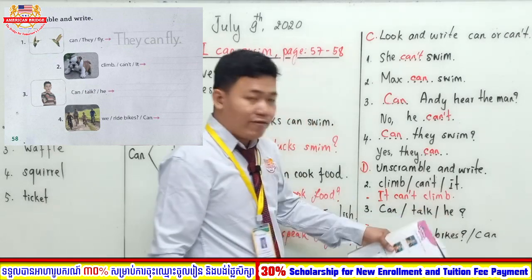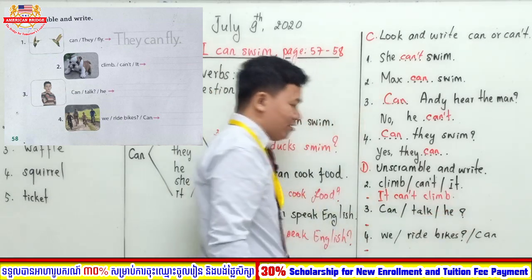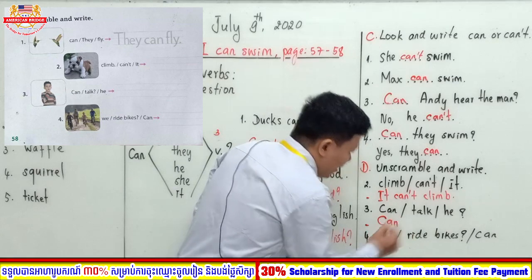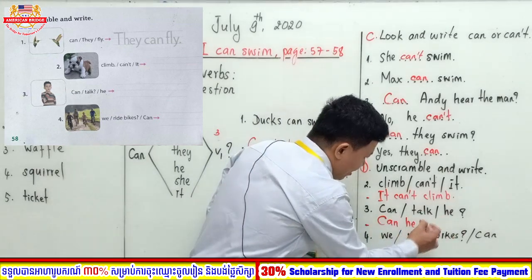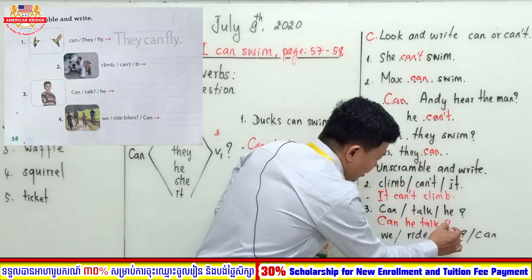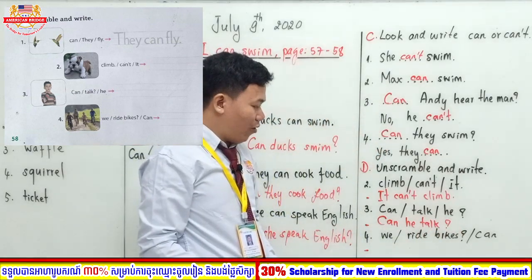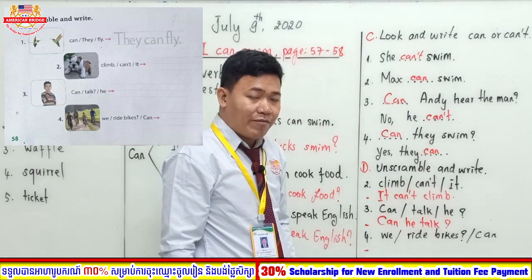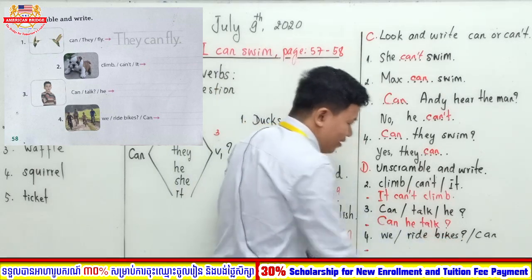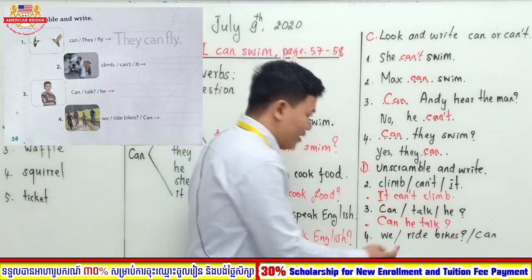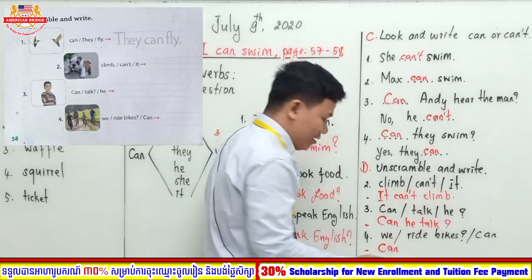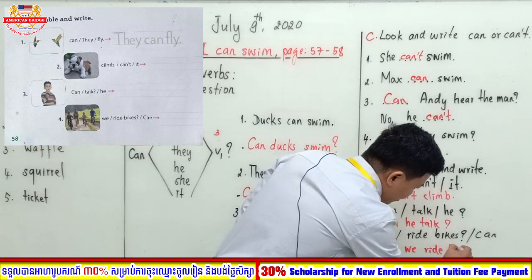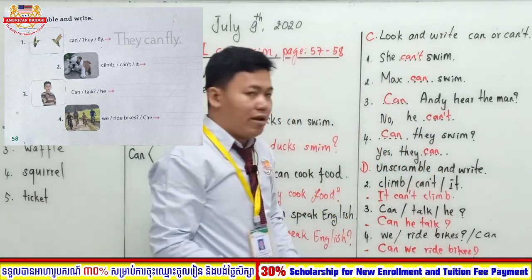How about the third one? The words are 'can / talk / he.' This is a question — you can see the question mark. We put 'can' first, then find the subject — 'he' — then verb one: 'Can he talk?' Don't forget the question mark. Number four: 'we / ride / bikes / can' — this is a question. Follow the form: 'can' first, then subject pronoun 'we,' then verb: 'Can we ride bikes?'